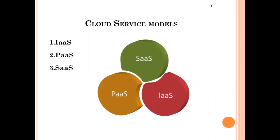Hello everybody. We have seen the types of cloud. In this video we are going to learn about the different cloud service models. There are three different service models of cloud: IaaS, that is Infrastructure as a Service; PaaS, that is Platform as a Service; and SaaS, that is Software as a Service.